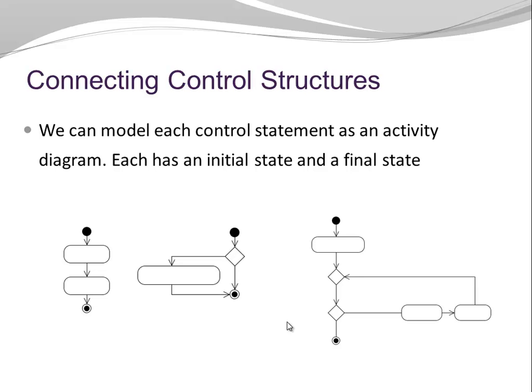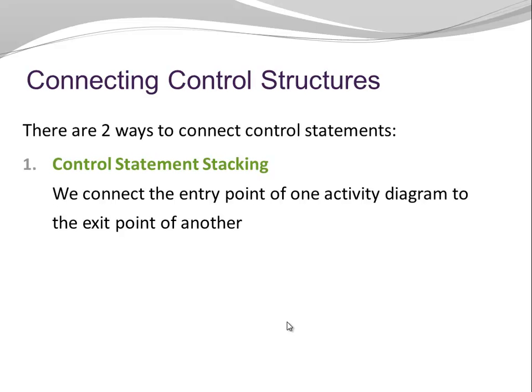At this point, we looked at different control statements corresponding to the three control structures. All of those are still fairly simple; however, they can be combined to represent more complex scenarios. We saw that each control statement can be modeled with an activity diagram, and each of those activity diagrams has an initial state and a final state. We can combine and connect control structures in two ways: by stacking and by nesting. Let's look at control statement stacking.